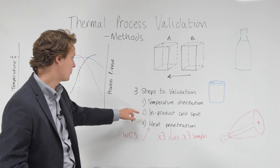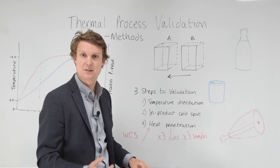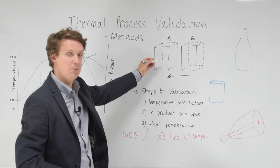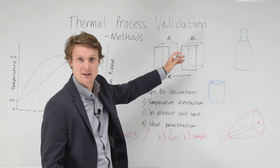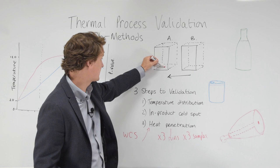Temperature distribution is normally some extra testing that's involved to understand where within our process is the coldest point in the environment. This could be two trolleys in an oven, or two crates in a retort. Often we might find that the coldest point is here, in the bottom.